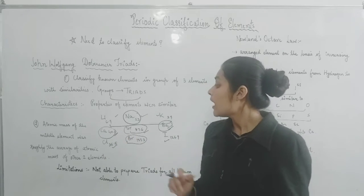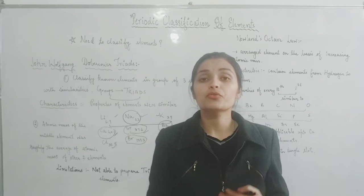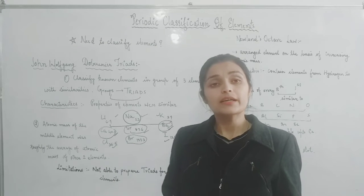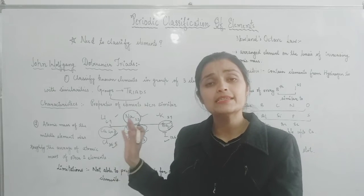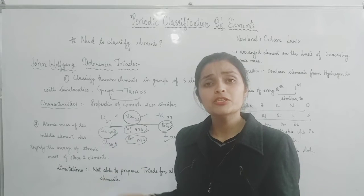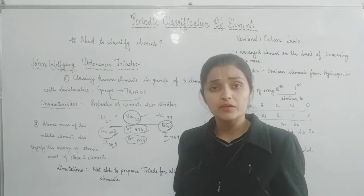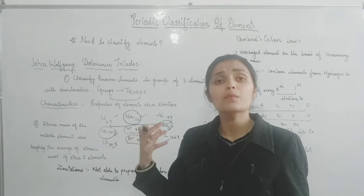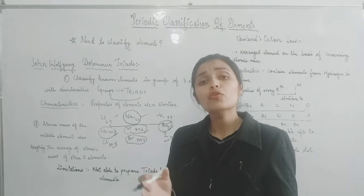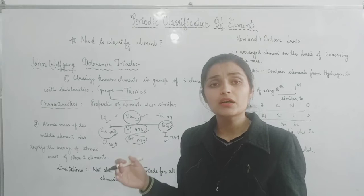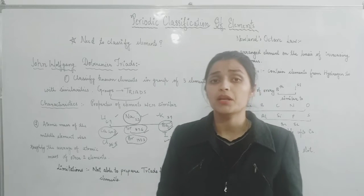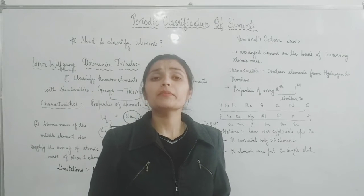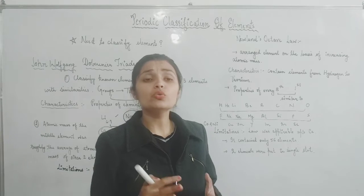Now you all know that when someone does good work it is also criticized. Why was Dobereiner's theory criticized? Because the triads grouping he gave suited some elements, but did not work for other elements. Also, within the triads, some elements had different properties, and he could not make triads for all elements. So Dobereiner's triads did not work for a long time.